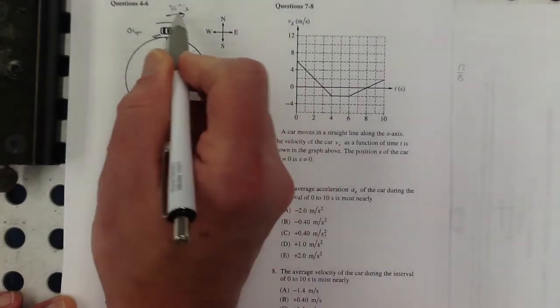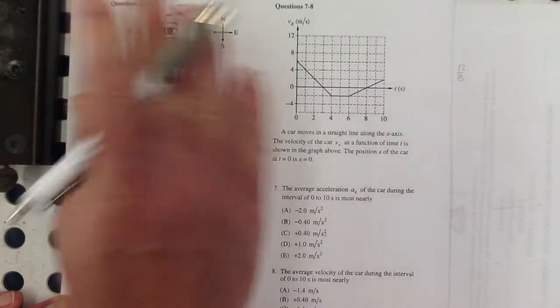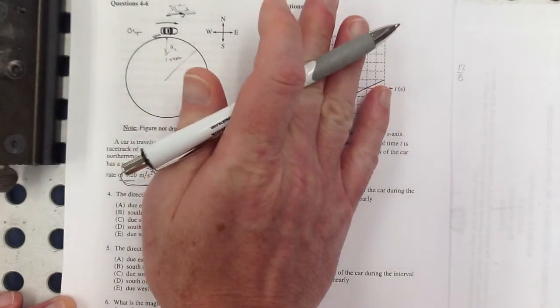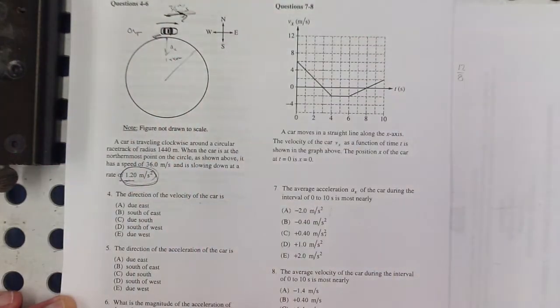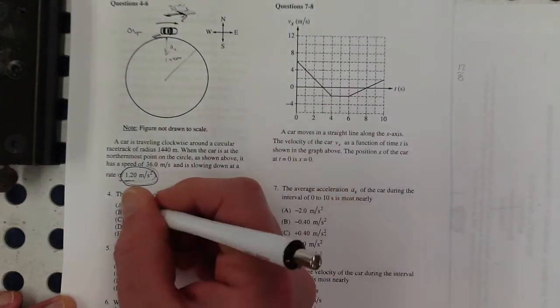The direction of the velocity of the car, well, the velocity is this way, and that's completely independent of acceleration. The accelerations are going to change that, but right now they told us that it's this way. So that is due east.